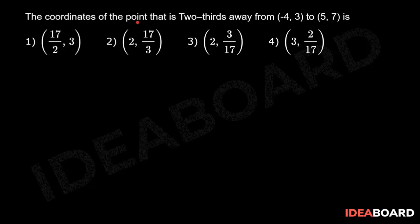The coordinates of the point that is two-thirds away from minus four comma three to five comma seven is. Let A equals minus four comma three and B equals five comma seven be the given points.